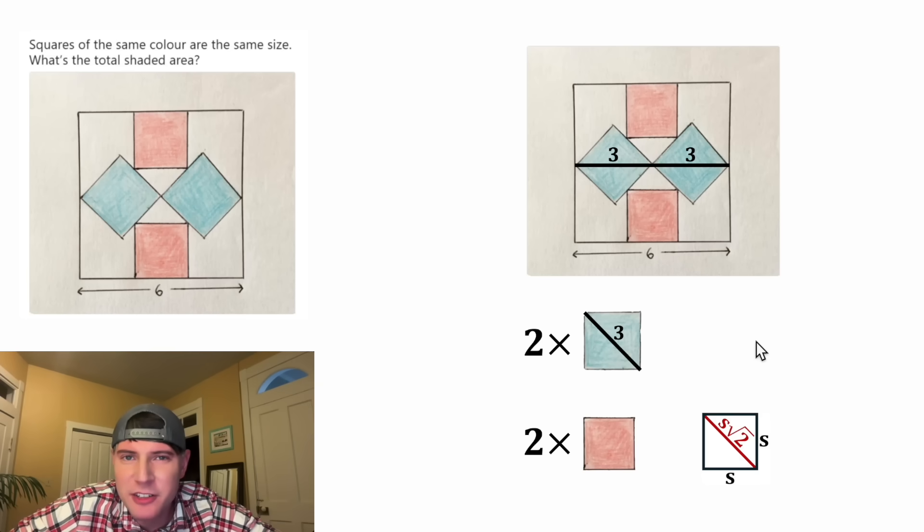In a square, the diagonal is always the square root of two times the side length. Or if you already know the diagonal, you can divide by the square root of two to get the side lengths.